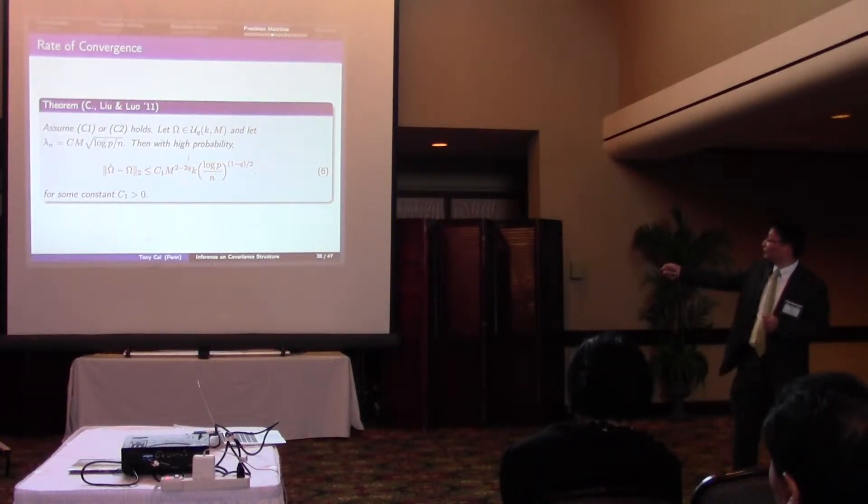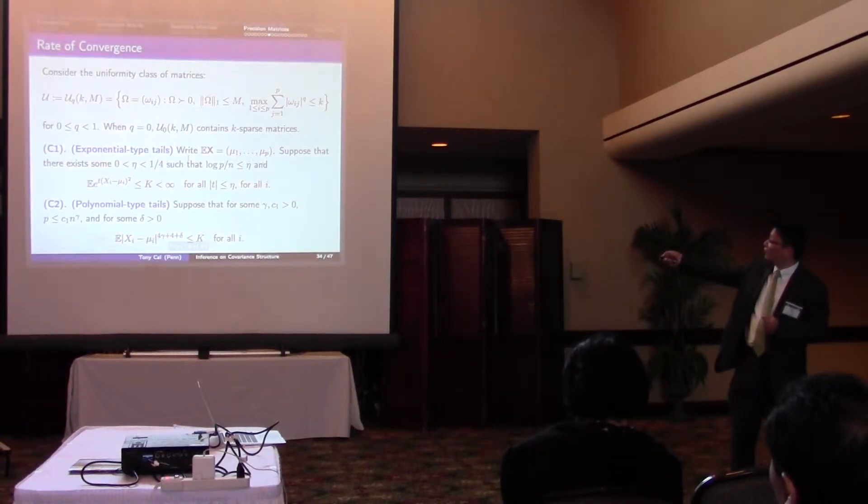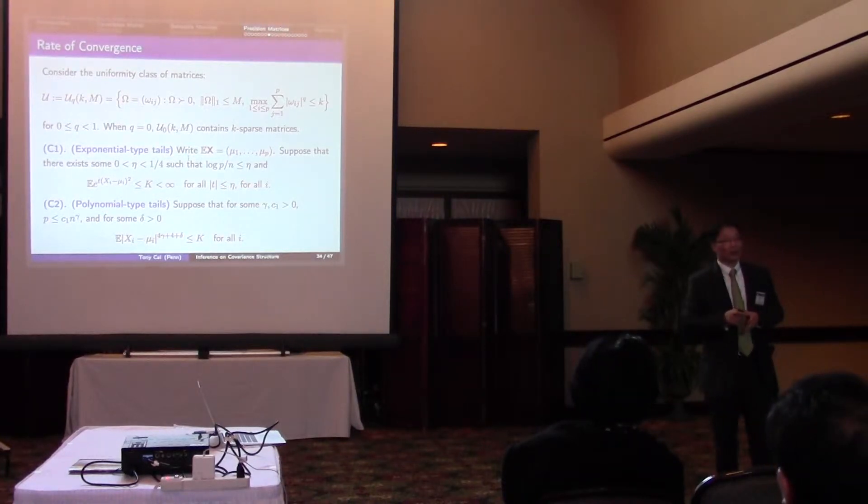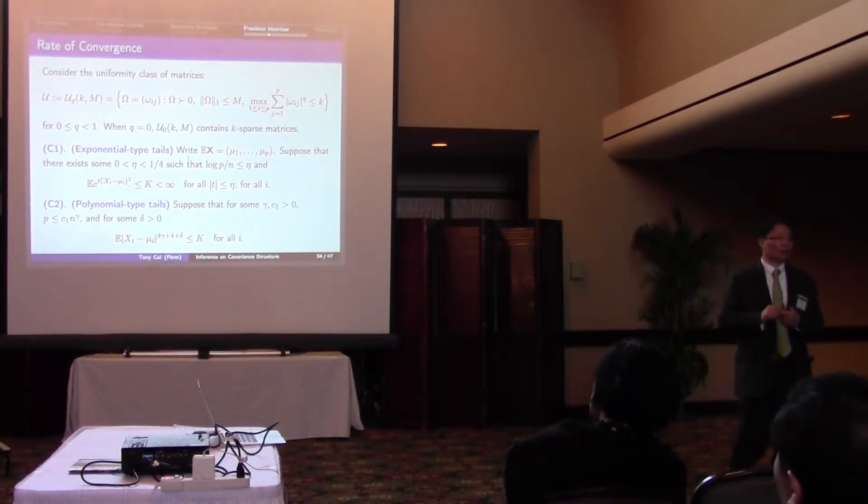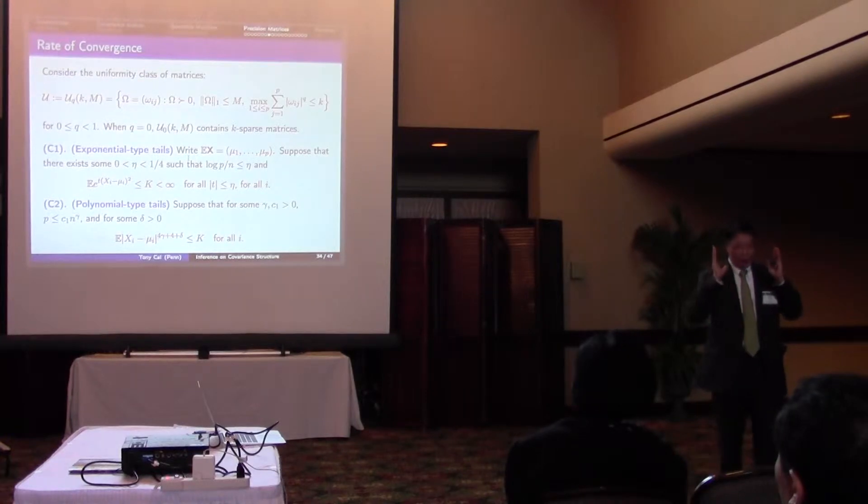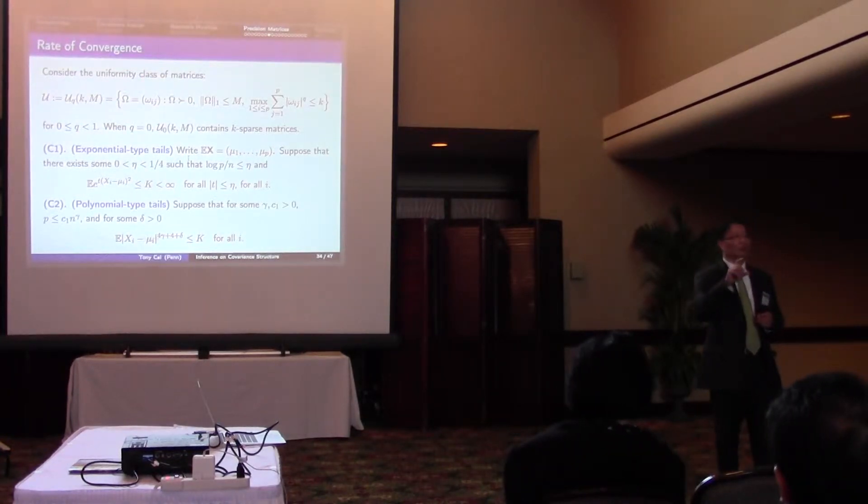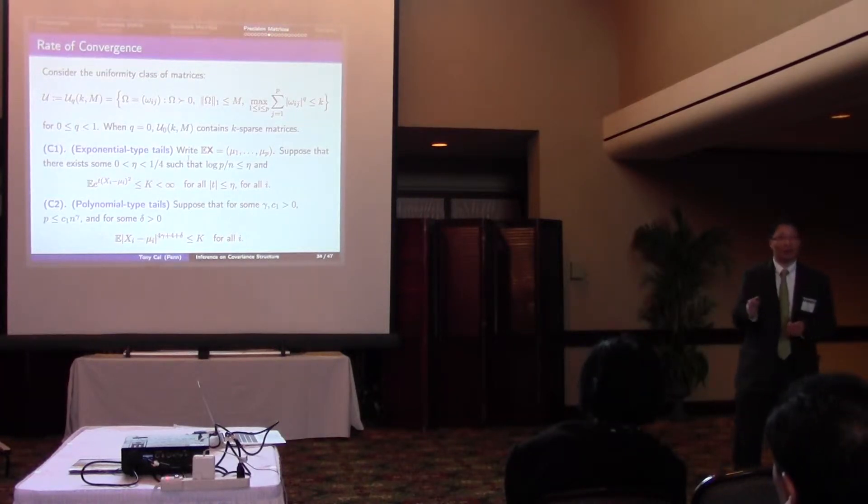Everything else is fairly clear except this M. And this M is the L1 norm bound for the precision matrix. L1 norm is the matrix L1 norm. So it's the maximum of the absolute sum of the columns. So each column, you sum them up in terms of absolute value,